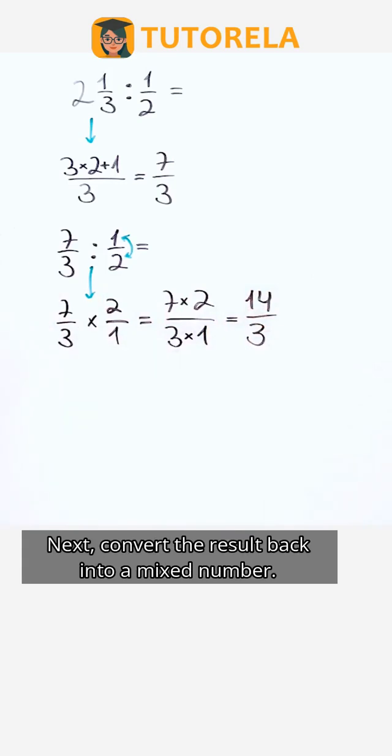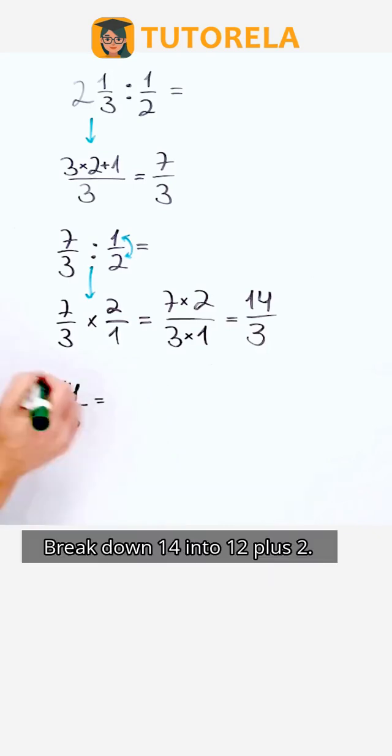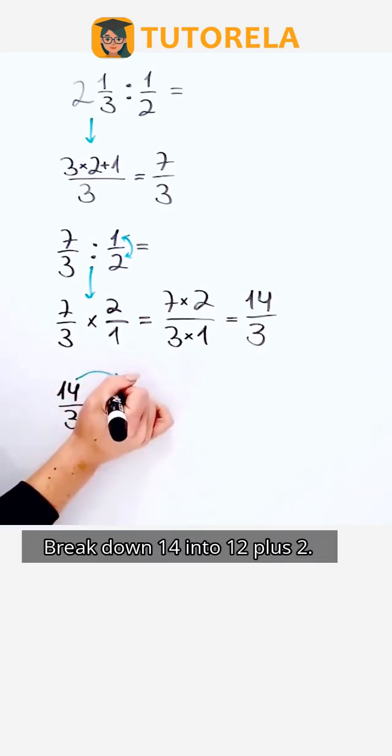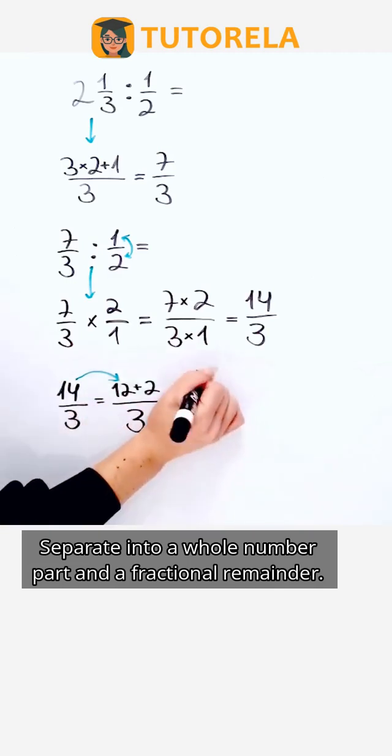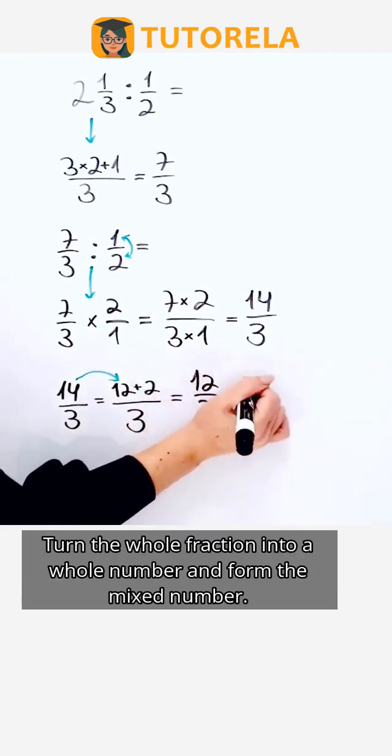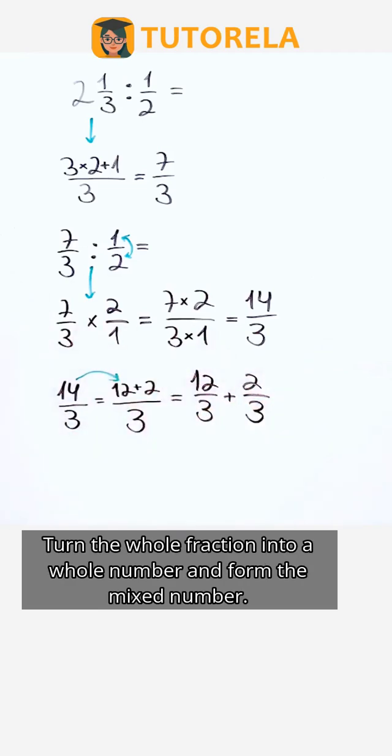Next, convert the result back into a mixed number. Break down 14 into 12 plus 2. Separate into a whole number part and a fractional remainder. Turn the whole fraction into a whole number and form the mixed number.